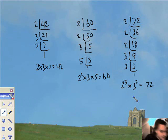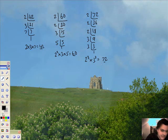That took about 4 seconds. Now use your answers and here they are, use your answers to write the highest common factor or find the highest common factor of 42, 60 and 72. So 42, 60 and 72. And I want to find the highest common factor.